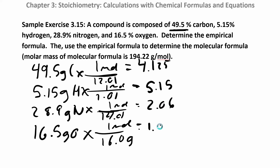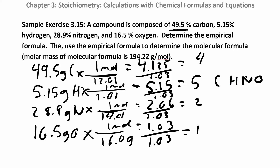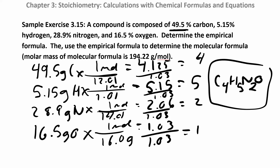Converting to moles gives us 4.125 moles of carbon, 5.15 of hydrogen, 2.06 of nitrogen, and 1.03 of oxygen. To get the simplest molar ratio, divide by the smallest number of moles — 1.03 — which gives approximately 4, 5, 2, and 1. So the empirical formula is C4H5N2O.